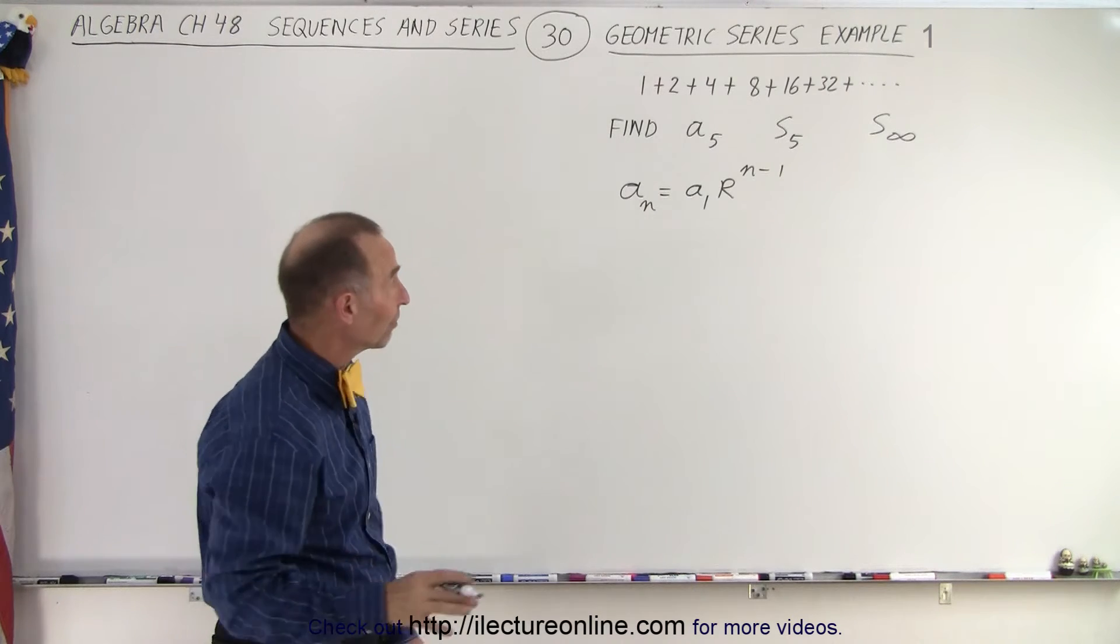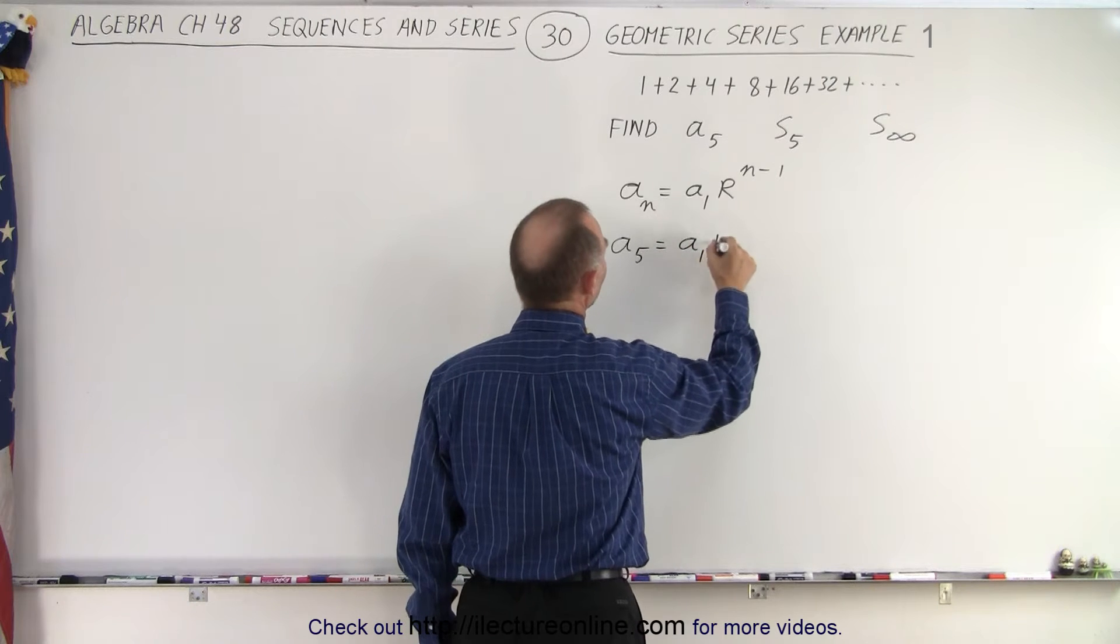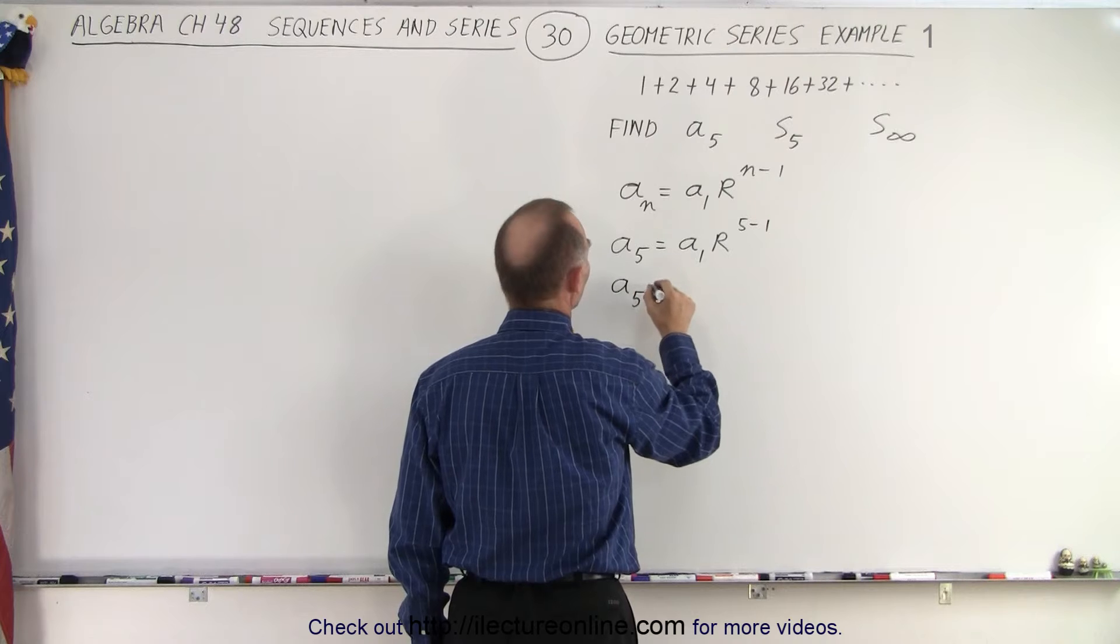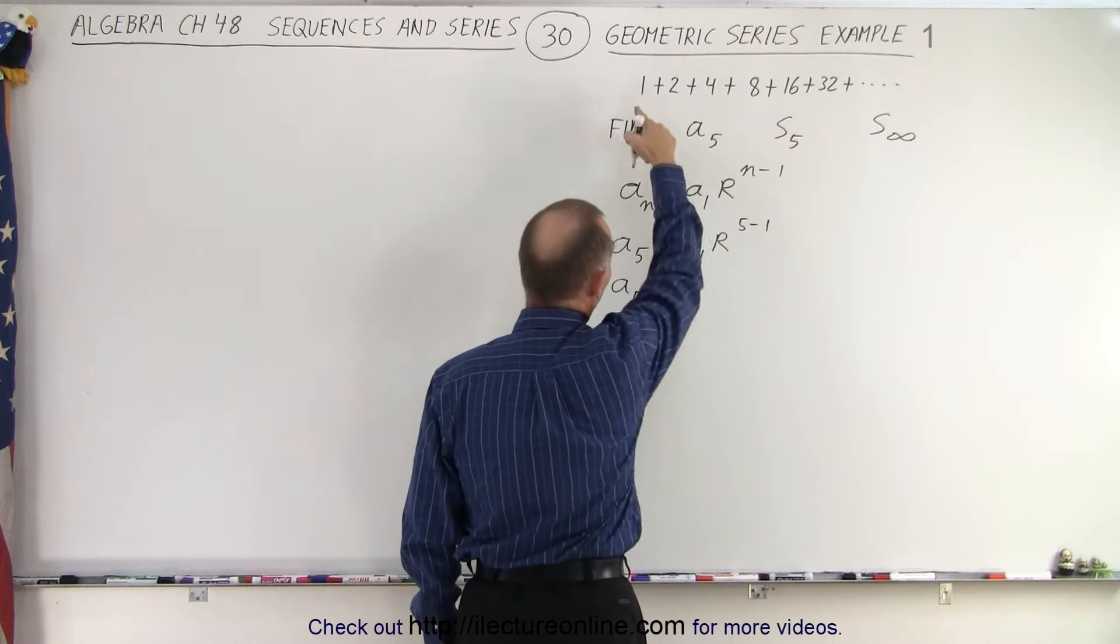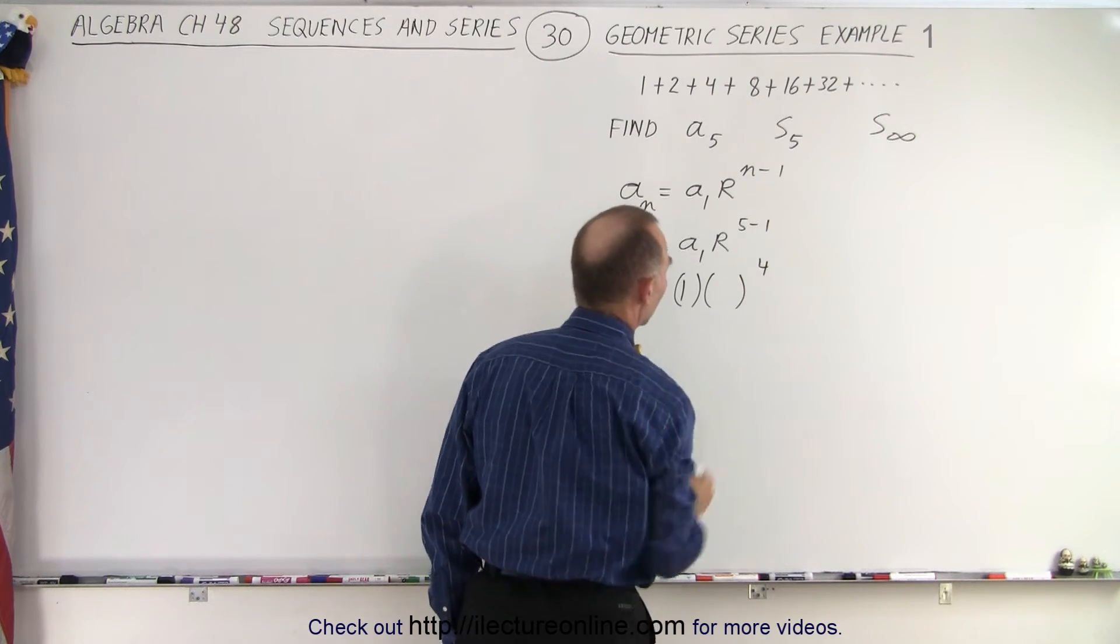Now that we have to find the fifth one, we say A sub 5 is equal to A sub 1 times R to the 5 minus 1. And so A sub 5 is equal to A sub 1, which is the first number, 1, times R to the fourth power.